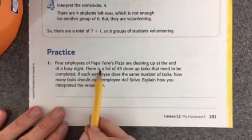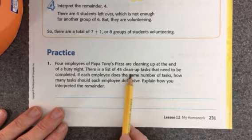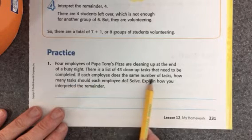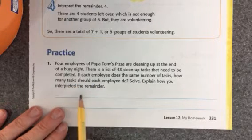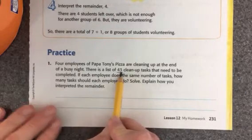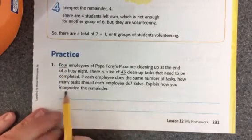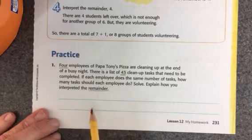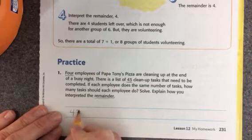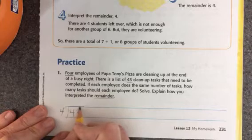4 employees of Papa Tony's Pizza are cleaning up at the end of a busy night. There is a list of 43 cleanup tasks that need to be completed. If each employee does the same number of tasks, how many tasks would each employee do? So we have 43 cleanup tasks and 4 employees. Let's go ahead and do 43 divided by 4 and figure out that answer.